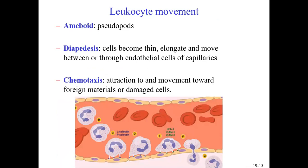Leukocytes have a special type of movement. First, they move in an amoeboid manner — similar to an amoeba. In the diagram, you can see a white blood cell, resembling a neutrophil, inside a blood vessel. It can attach to the vessel wall and extend projections called pseudopods that help it walk or move along the edge of the blood vessel.